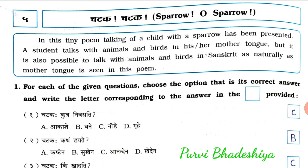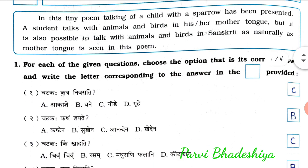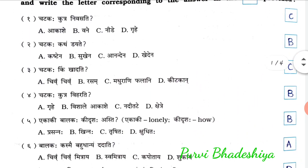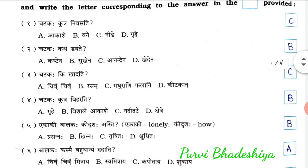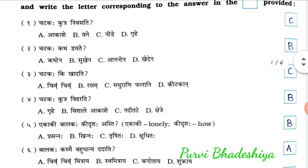Question number 1: for each of the given questions, choose the option that is its correct answer and write the letter corresponding to the answer in the box provided. First MCQ: Chattak khutr nivya sati — the answer is C, needi. Second, Chattak khut cosm udyeuti — the answer is B, sukhene.